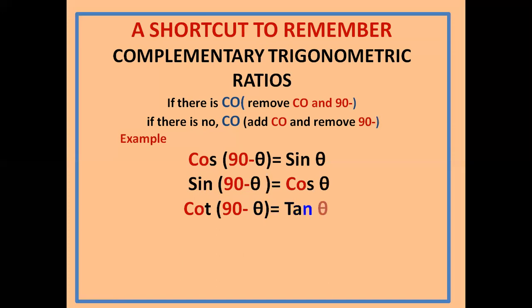Now the ratio is tan(90 minus θ): there is no 'co', so add 'co' and remove '90 minus'.